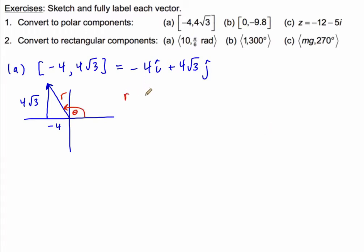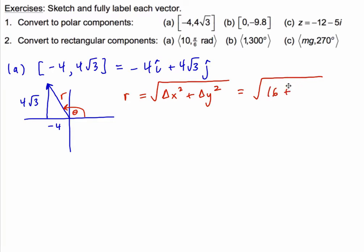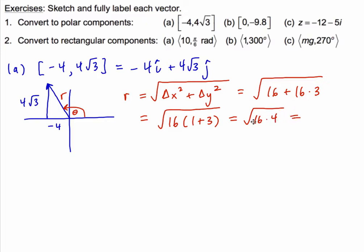We can launch into the formulas for finding the magnitude r and the standard position angle theta. We know that r squared equals delta x squared plus delta y squared, so r equals the square root of delta x squared plus delta y squared. That gives us negative four squared, which is 16, plus four root three squared, which is 16 times three. Factoring out 16, we get the square root of 16 times four, and since the square root of 64 is eight, r equals 8.